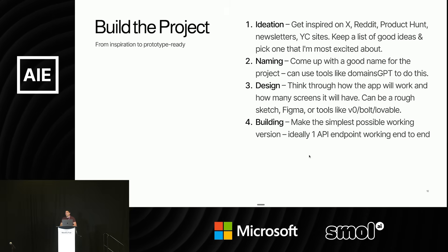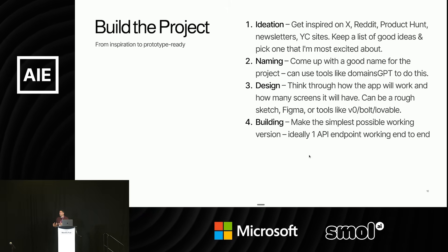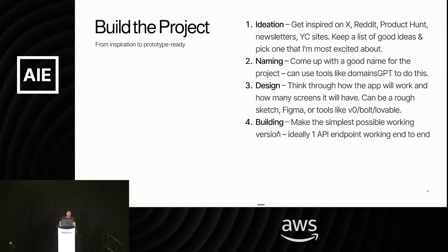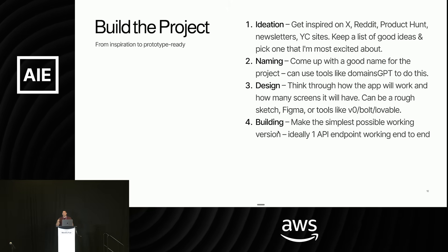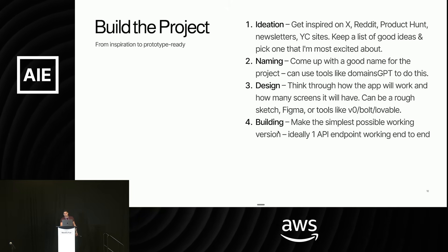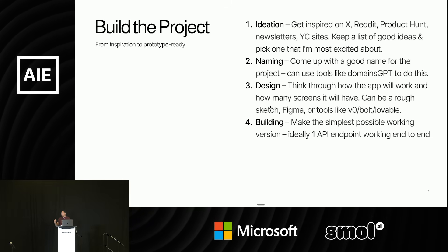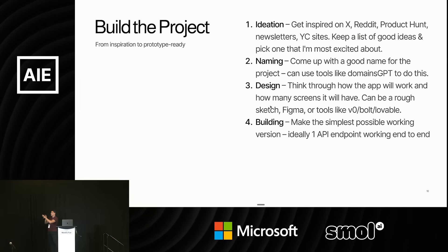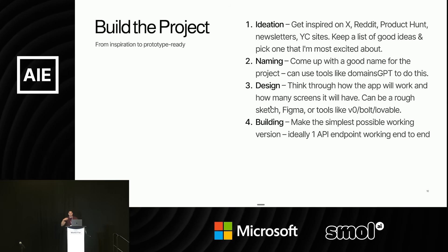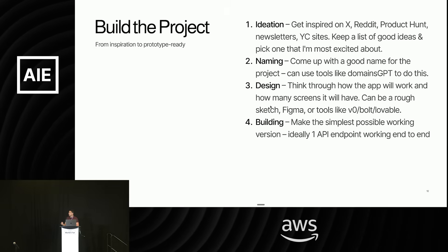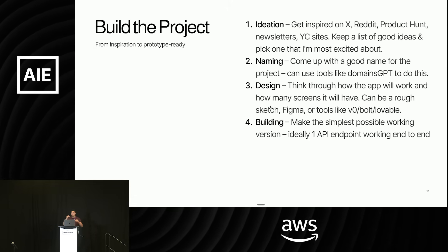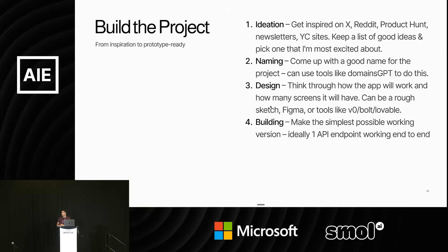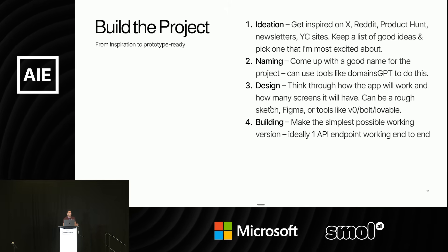If a new image model comes out next week that's really incredible and open source, I'm probably going to be scrambling to build an app with that. Naming is another big one — you want a short, memorable name. You can use AI tools like Domains GPT to check names that also have the domain name available. Number three is design: thinking through how the app will work, like having a landing page where the user clicks to get to a page where they upload something and see an image. You can sketch it out on paper, use Figma, or use prototyping tools to think through what the app is.